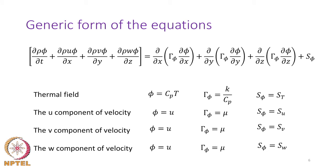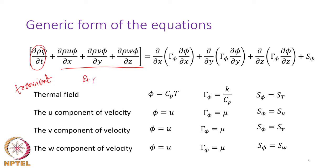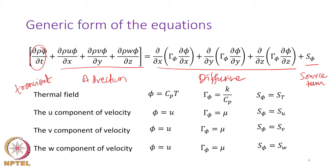The generic form of the governing equations has four terms: the transient term, the advection term, the diffusive term, and the source term. With these four terms, the equations are similar for all quantities we want to solve. When going from the temperature field to velocity components, the meaning of some terms changes slightly. There is a small typo noted — the second and third rows should read V and W respectively.